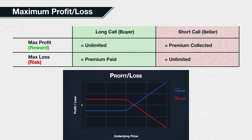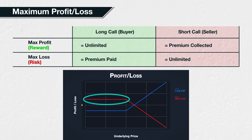The call option buyer suffers their maximum loss when the underlying price at expiry is below the strike price. When this is the case, the call value is zero and they lose the premium they paid for the option. Similarly, for the call option seller, they make their maximum profit when the underlying price at expiry is below the strike price. The seller gets to keep the premium they collected and does not have to pay anything out, so their maximum profit is equal to the premium collected.